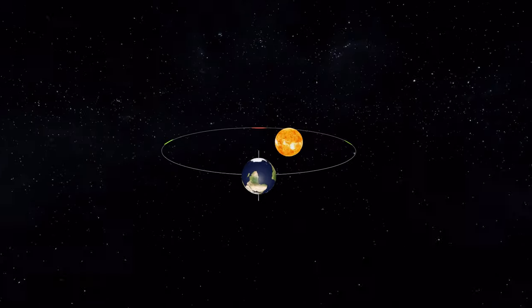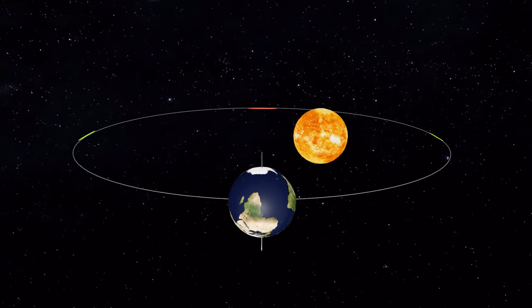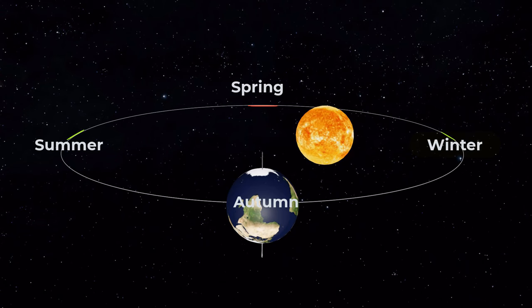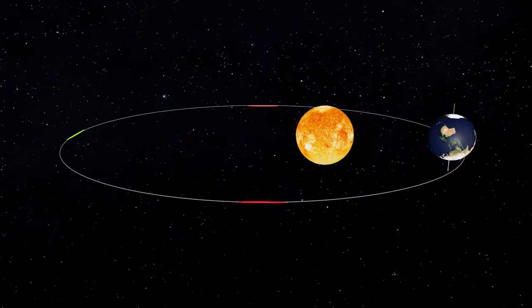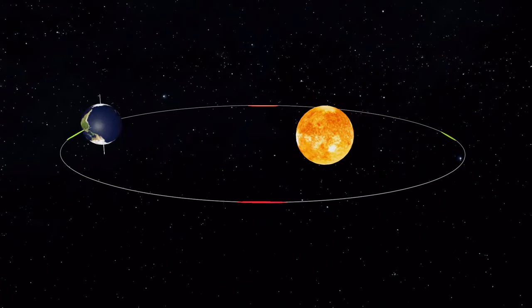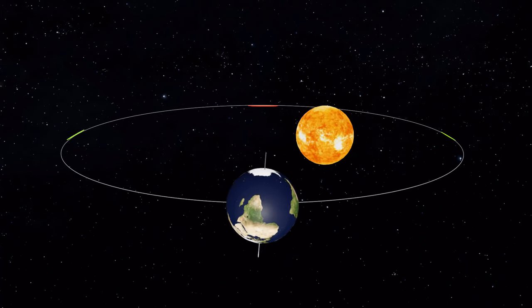Welcome to our video on exploring the seasons of the year. Have you ever wondered why we experience different seasons throughout the year, such as spring, summer, autumn, and winter? The answer lies in the Earth's motion around the Sun and its tilt on its axis.